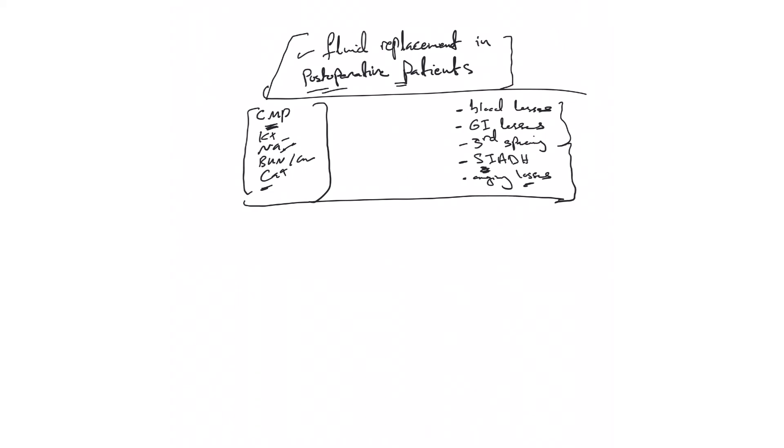Now, fluid replacement here falls, as we talked about in previous videos, under volume resuscitation, where we are replacing abnormal losses, or it will fall under maintenance IV fluid, where the patient is not having any abnormal losses but is NPO post-operatively for a reason, mainly with GI surgeries. So we need to put them on some maintenance IV fluid to replace their physiologic losses.